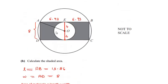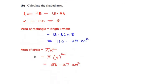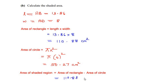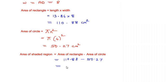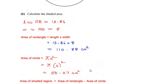To get the area of the shaded region, we subtract the area of the circle from the area of the rectangle: 110.88 minus 50.27 = 60.61 square centimeters. So the area of the shaded region is 60.61 cm².